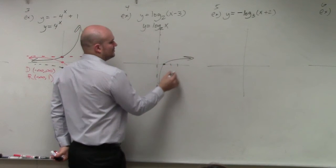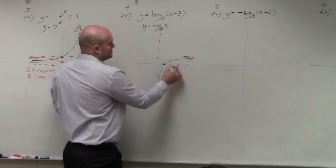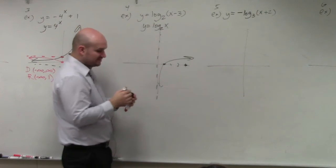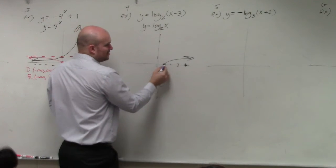1, 2, 3. So now, what also got shifted to the right was its asymptote. 1, 2, 3.